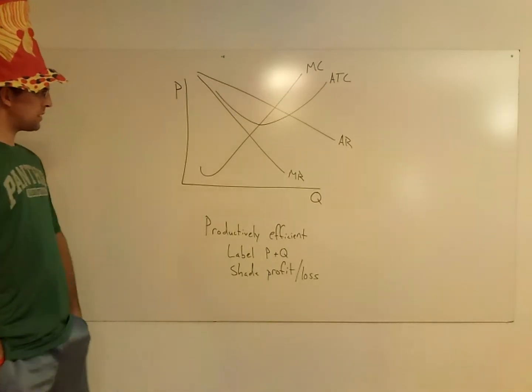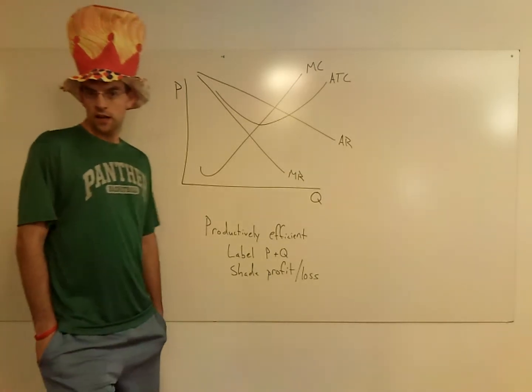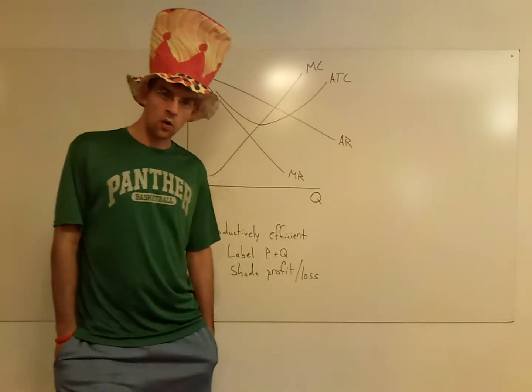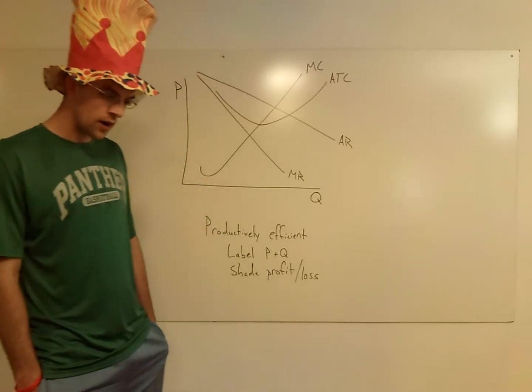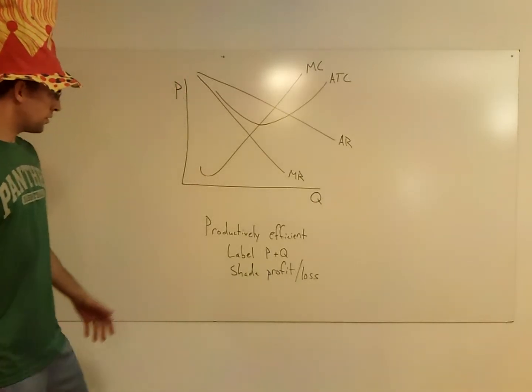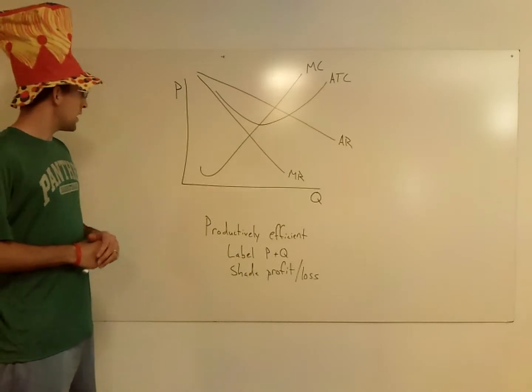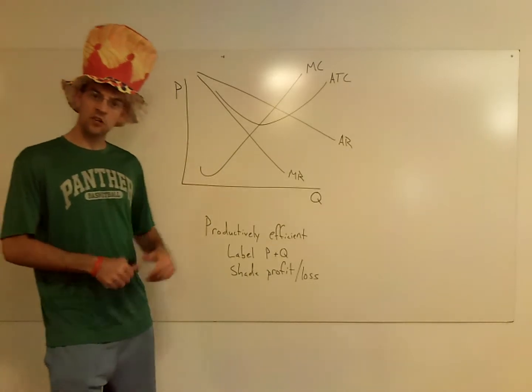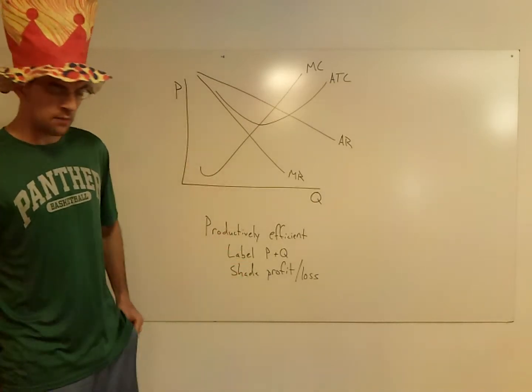Now, one of the things they're going to make you do on the AP test at some point is figure out the price and quantities and the profit area of a monopoly. There's a couple different rules that you can be asked to follow. The common one is MR equals MC, which is profit maximization, or the unregulated monopoly.